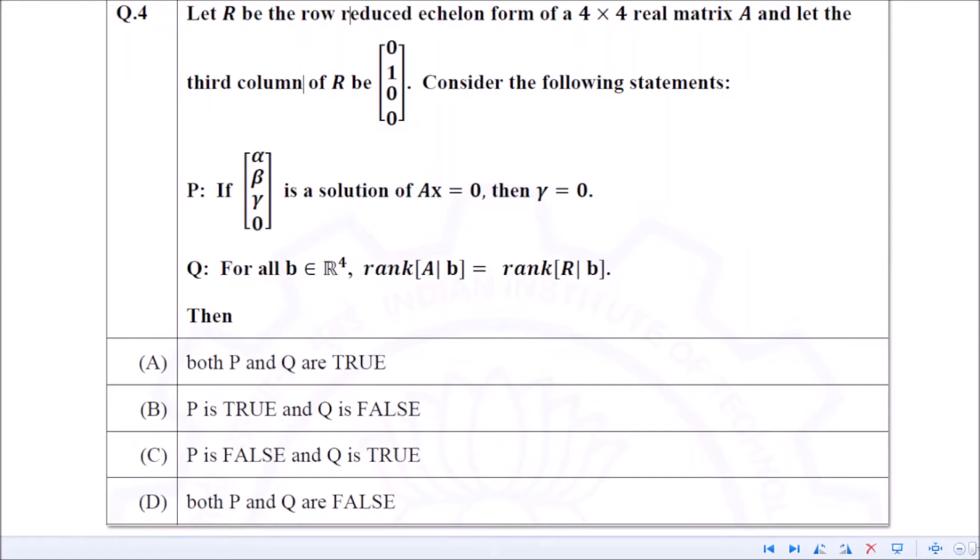We have to see whether statements P and Q are true or false. What is statement P? If [α, β, γ, 0] is a solution of Ax = 0, then γ has to be 0. Is this always true for any R which is RREF?